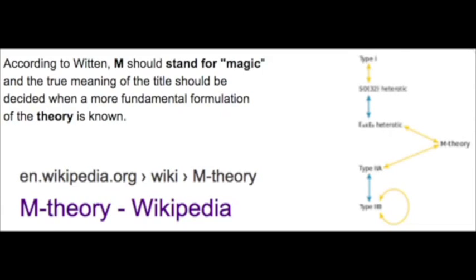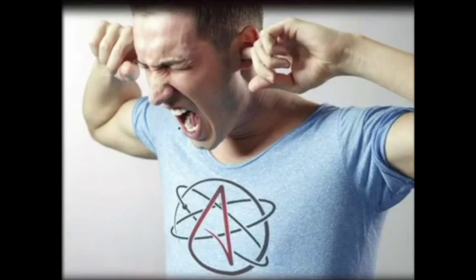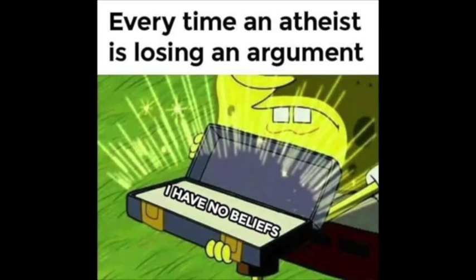In closing, the next time some cocky atheist tells you that you believe in magic, remind them that M in M-theory — even according to Edward Witten, who is its creator — should stand for magic, and the true meaning of the title should be decided when a more fundamental formulation of the theory is known. It is them that actually believe in magic, because God hates magic, and even a layman of scripture knows this. So again, it is them that believe in magic, and they are too uninformed to even connect the dots, because they don't even know what their own theory teaches.